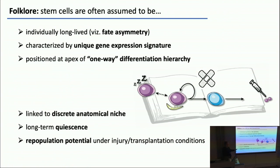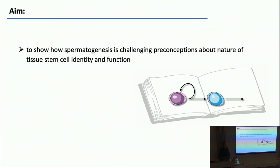We now know that many of these things are not true. What's nice about the germline is I'm going to tell you that none of those things are true. All of these are attributes that people wanted to apply to stem cell populations, but in the case of the germline, we'll see none of these things are true.